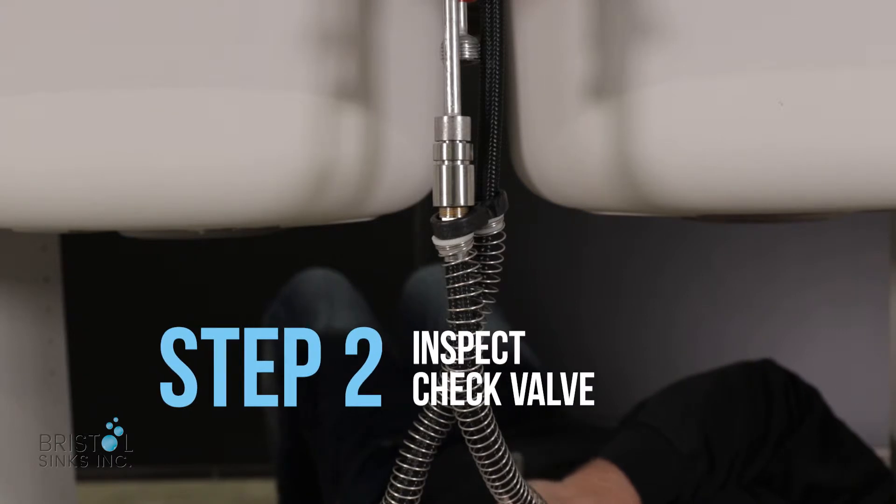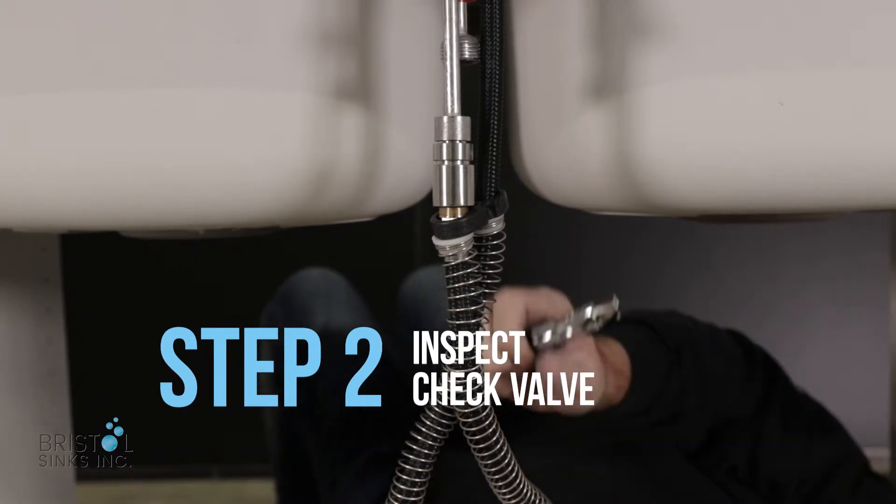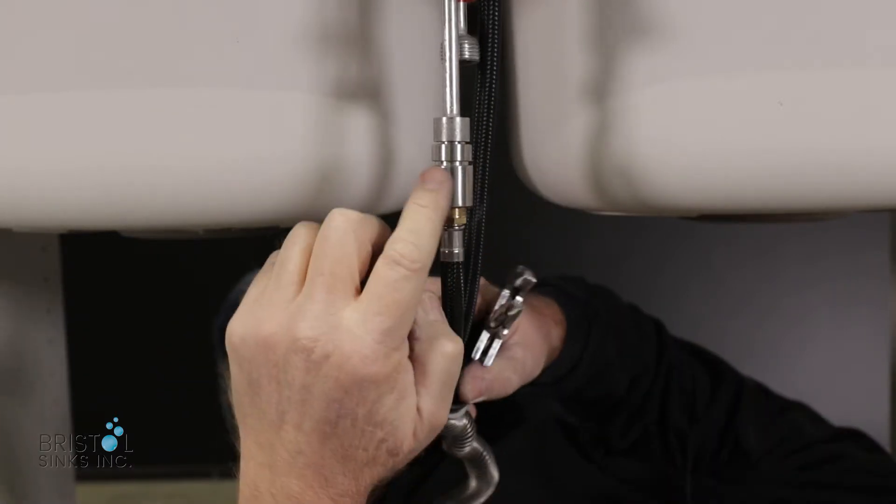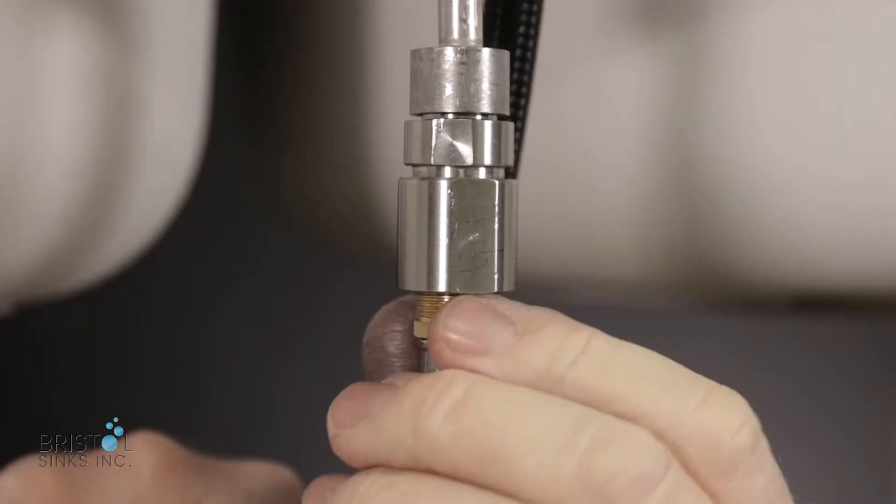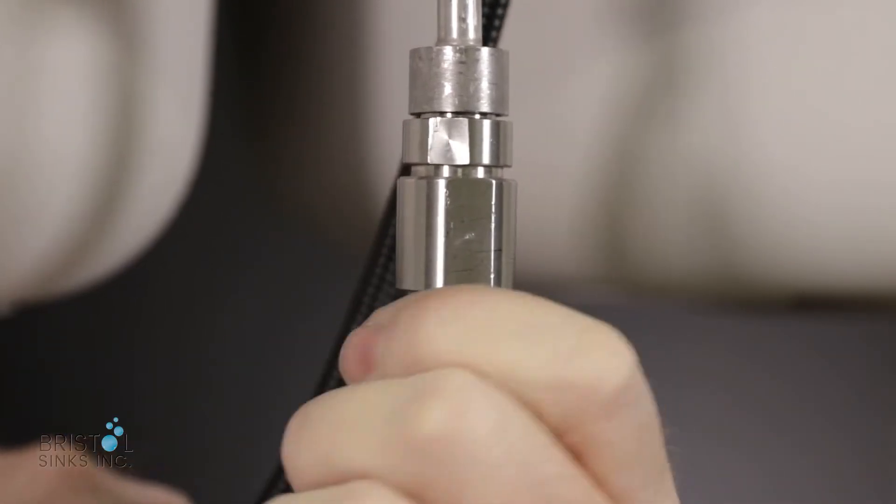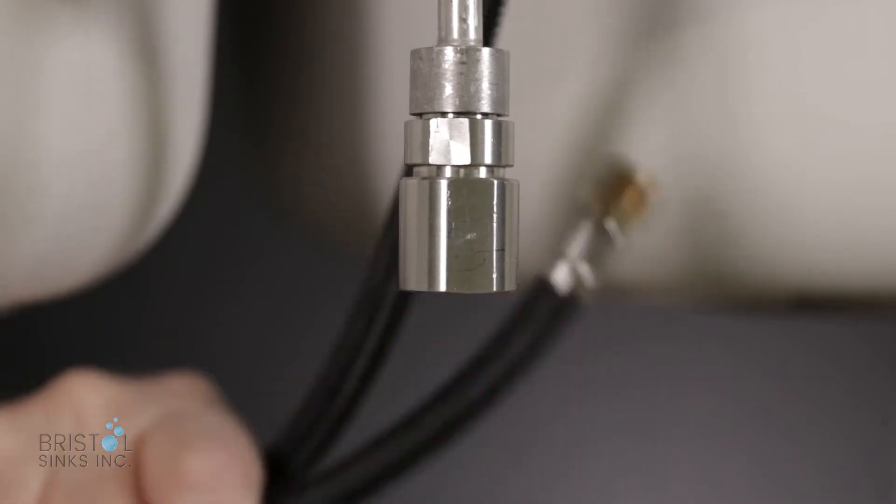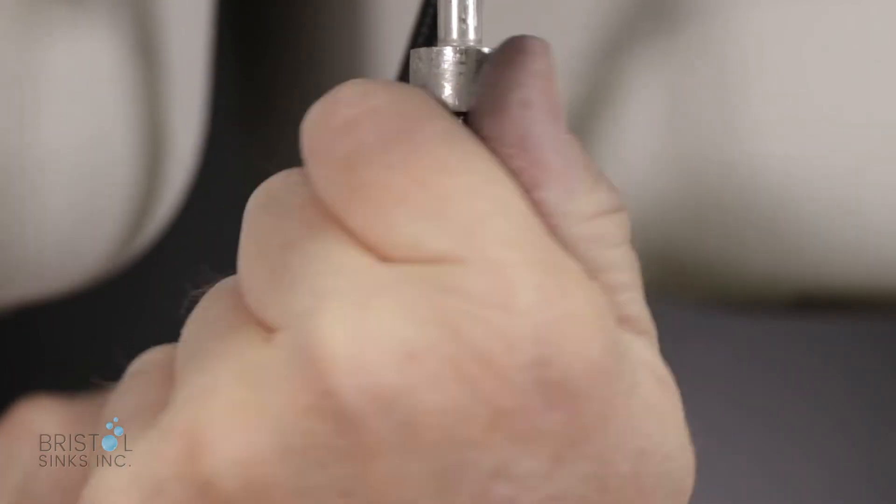The second step to diagnose the low water pressure in the faucet is to take a look at this check valve located underneath the faucet. What you do is disconnect the pull-out hose from the check valve and then take the check valve off completely.